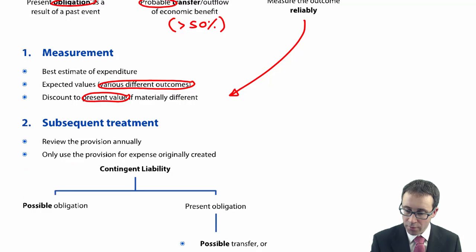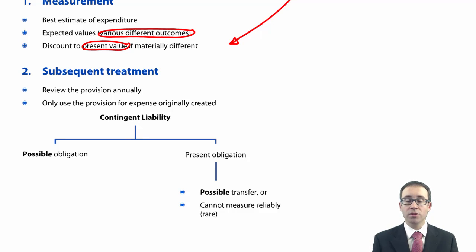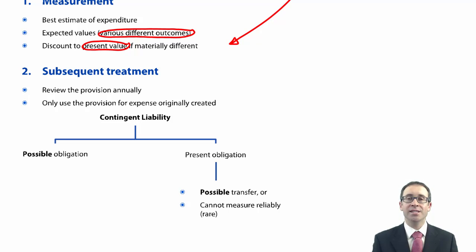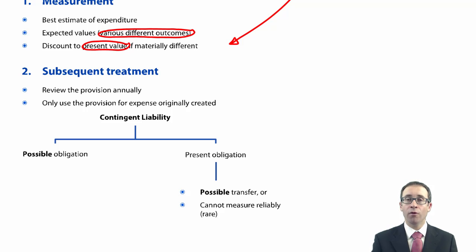Moving on to the subsequent treatment of your provision: you need to review the provision annually if it's there for several years and ensure that it is still the best estimate of expenditure. If not, you adjust it and any adjustments go through profit or loss. You can only use the provision for the expense that it was originally created for.